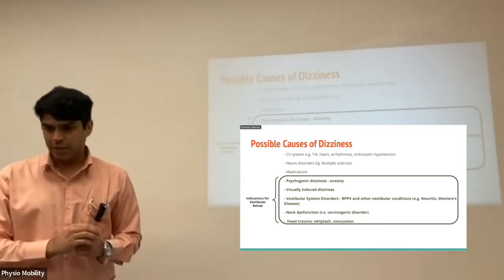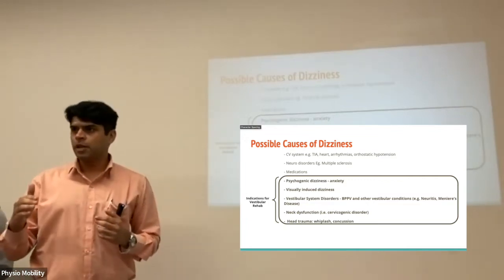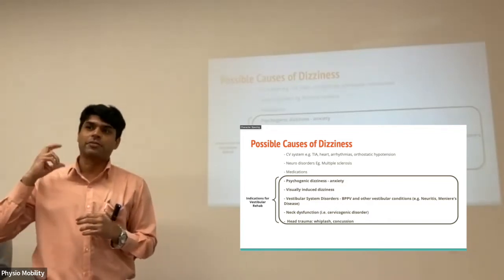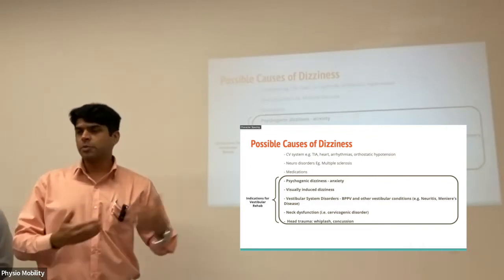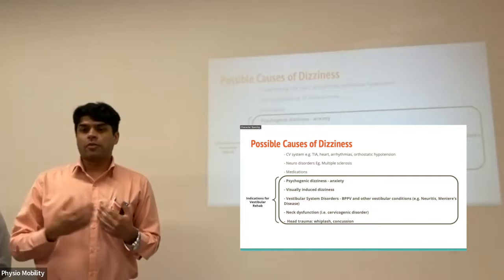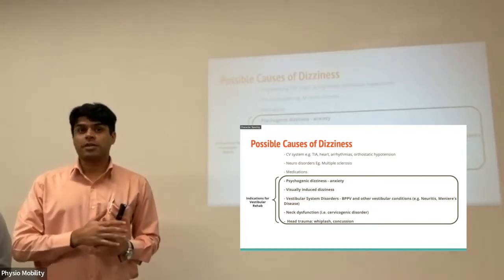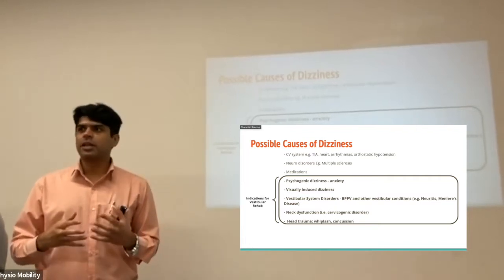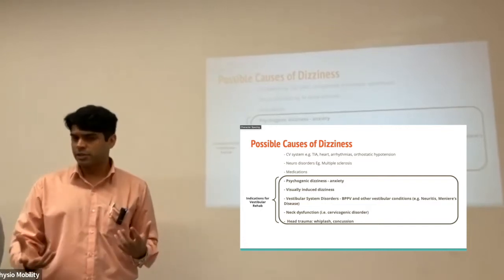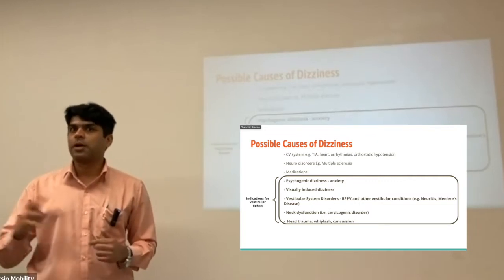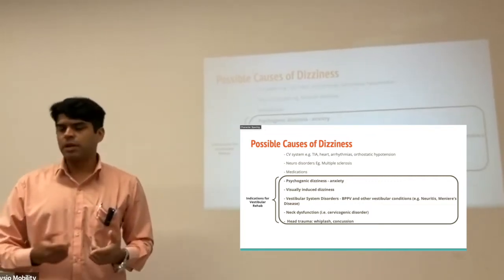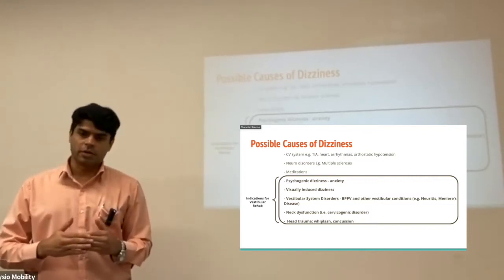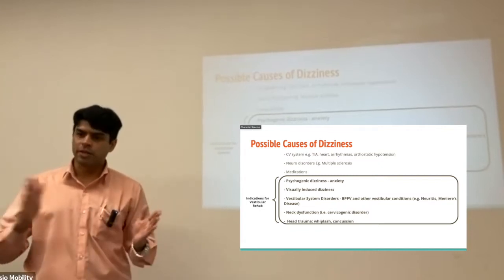Neck dysfunction is one of the least understood causes. To this day there is a little bit of controversy about whether cervicogenic dizziness — that is, dizziness originating from the neck — should be considered part of vestibular rehab or not. For our purposes, we do consider it. Clinically, we've seen that it actually does have an effect on balance and dizziness. Trauma — like someone in an accident, a fall, a whiplash injury, or a concussion — would also be a very good candidate for vestibular rehabilitation to improve upon the function of your system.